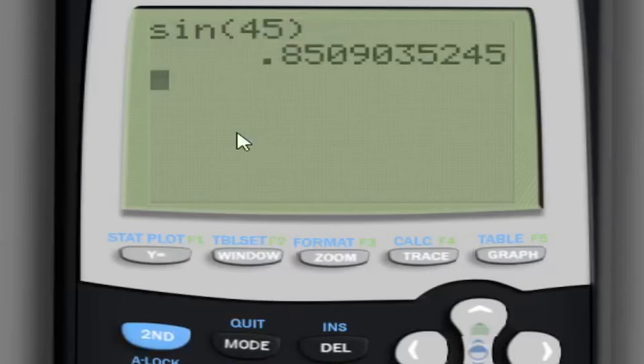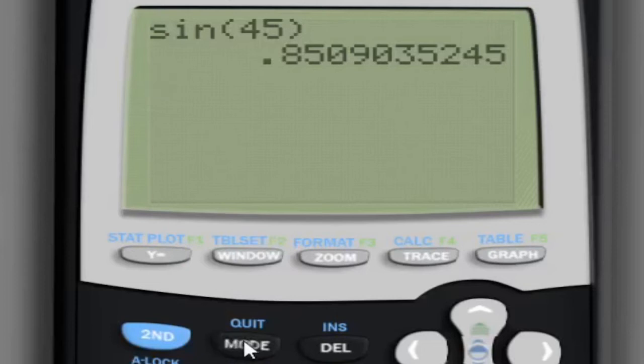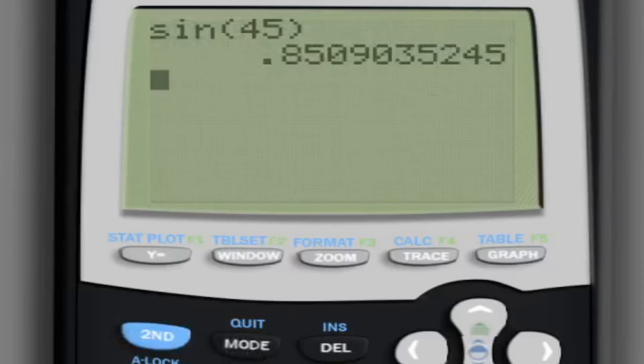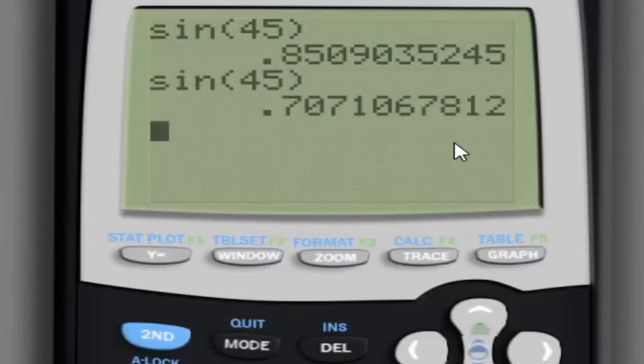We get a set value, right? But if we go and switch from radian to degree and we put the same number, we are going to see that our answer is vastly different.